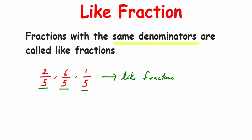Now, what happens if denominators are not the same? Then we call them something else. Let me take one more example: suppose I have 3/10 and 7/10 — these are also called like fractions because they share the same denominator.